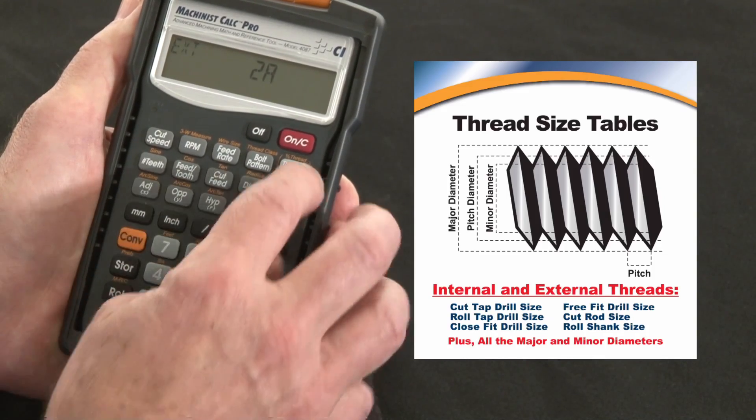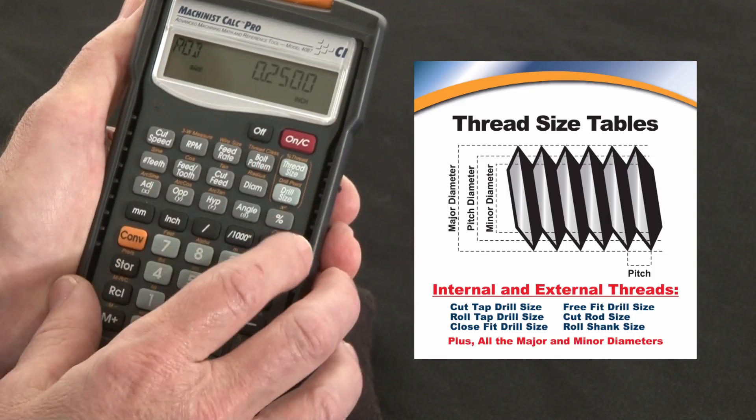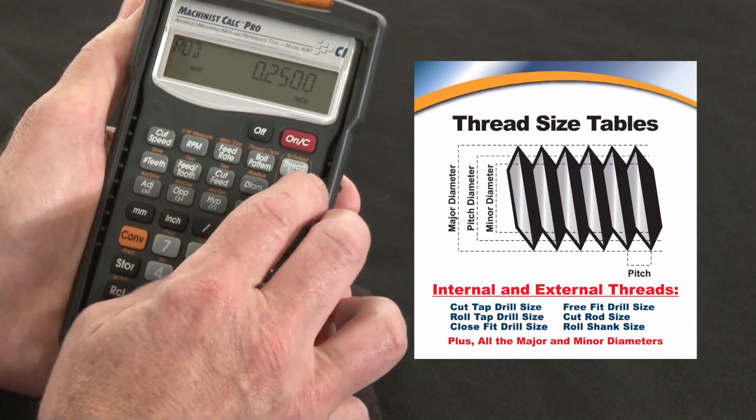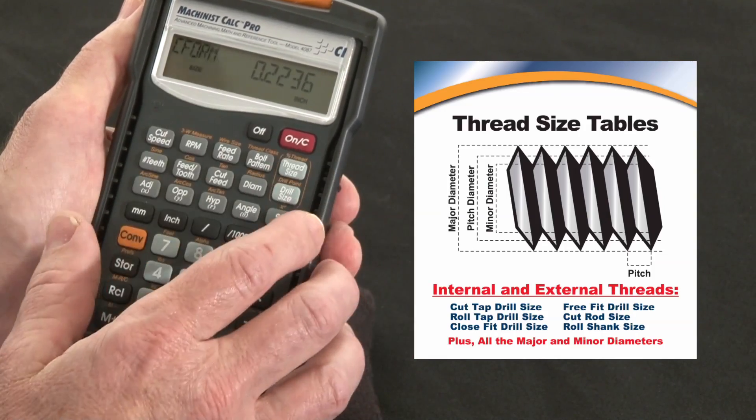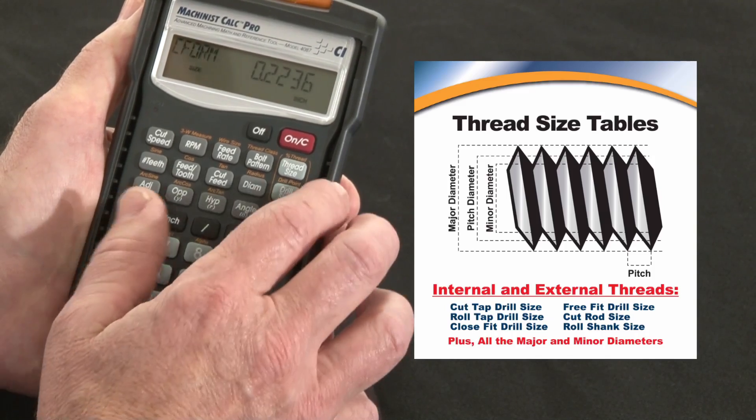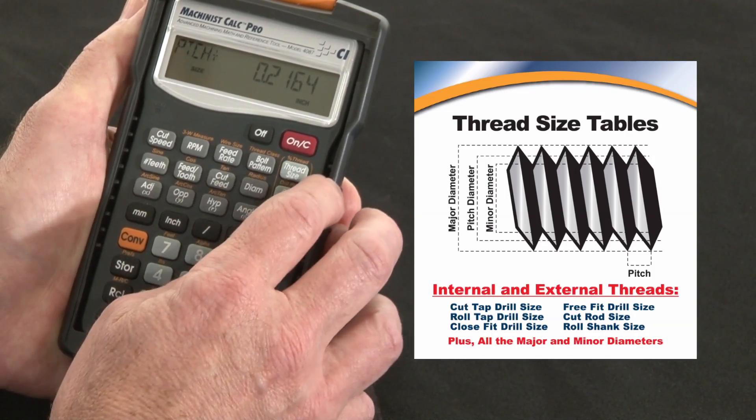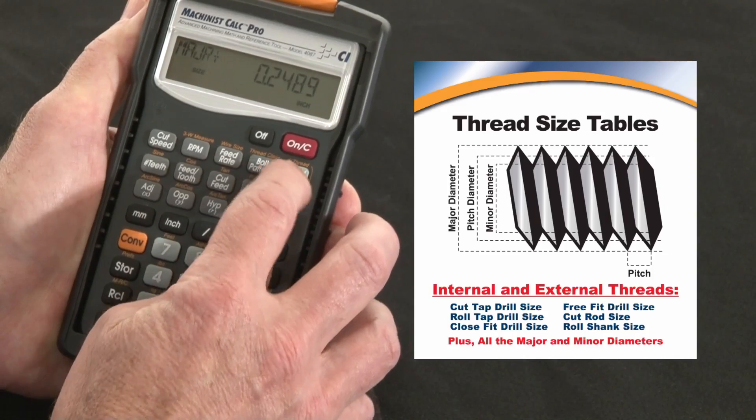We'll use the same size, a 1.25, so there it tells me my rod diameter is going to be .25, that's not a surprise. Press again, cold form is going to be .2236, and then if I keep pressing, it will give me all my major and minor pitch diameters all the way through.